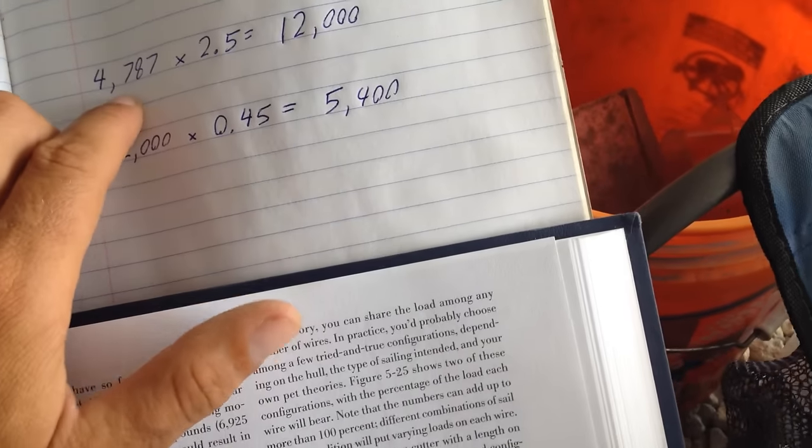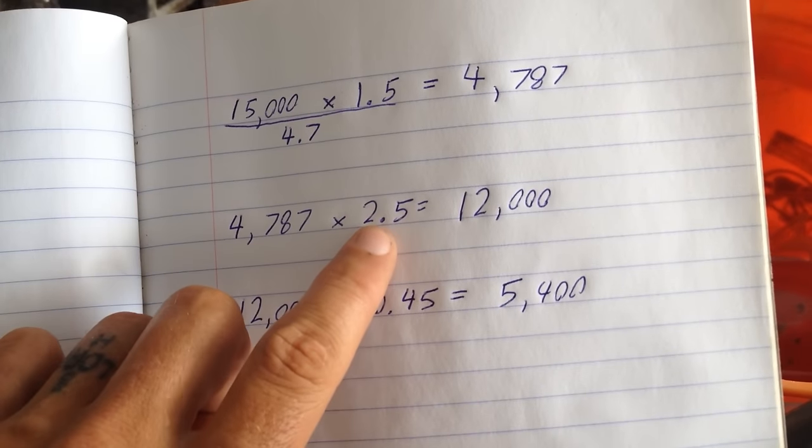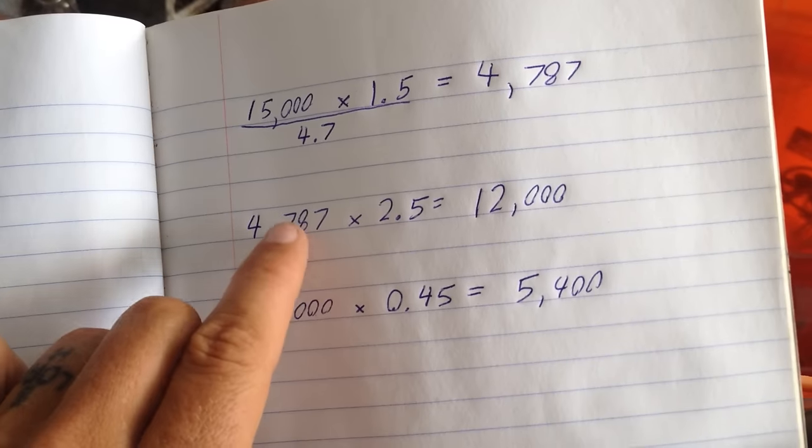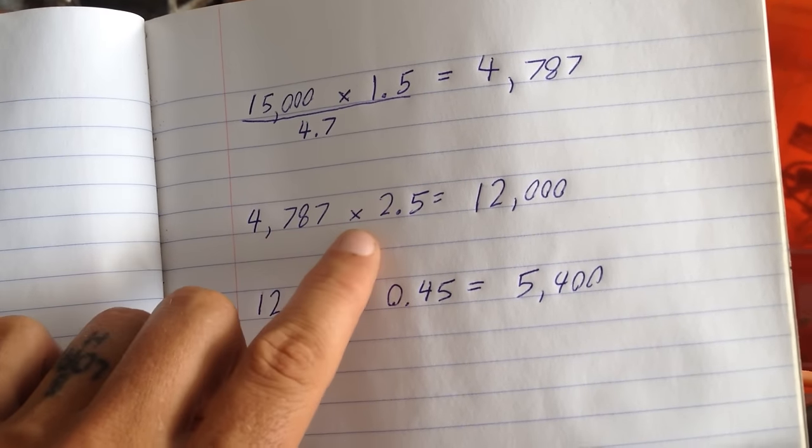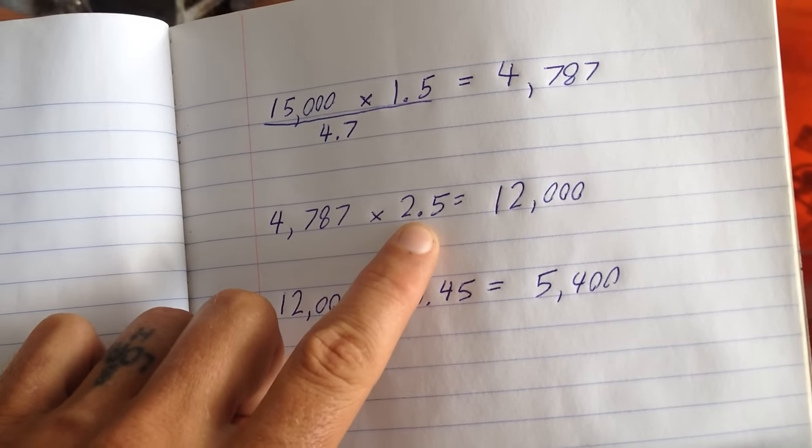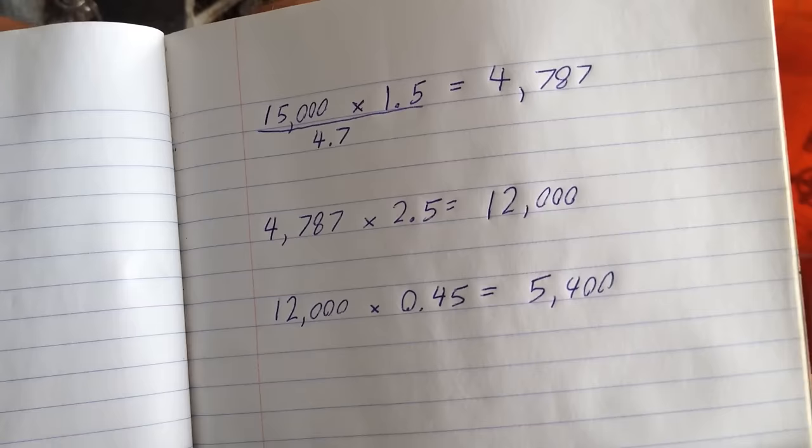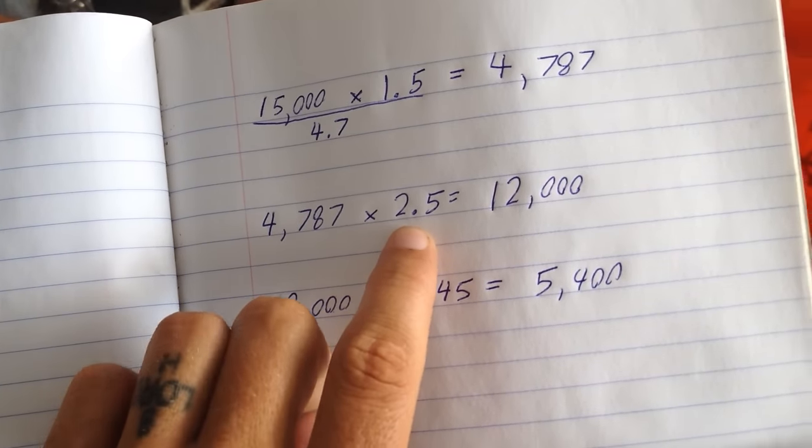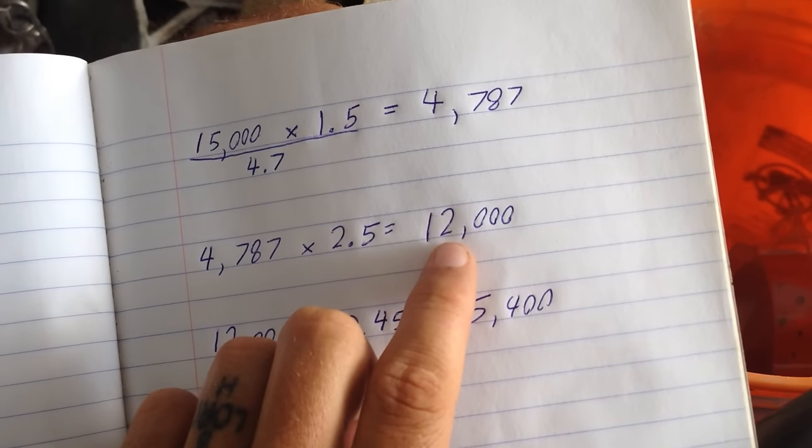Then the next thing that you do is you multiply that by a factor of 2.5, and that's a safety factor right there. So this is technically what you need to be concerned with, but when you're talking about shock loading and everything else, you want to multiply it by a safety factor, and 2.5 is pretty generous from what the book says. So that rounds off to being about 12,000.